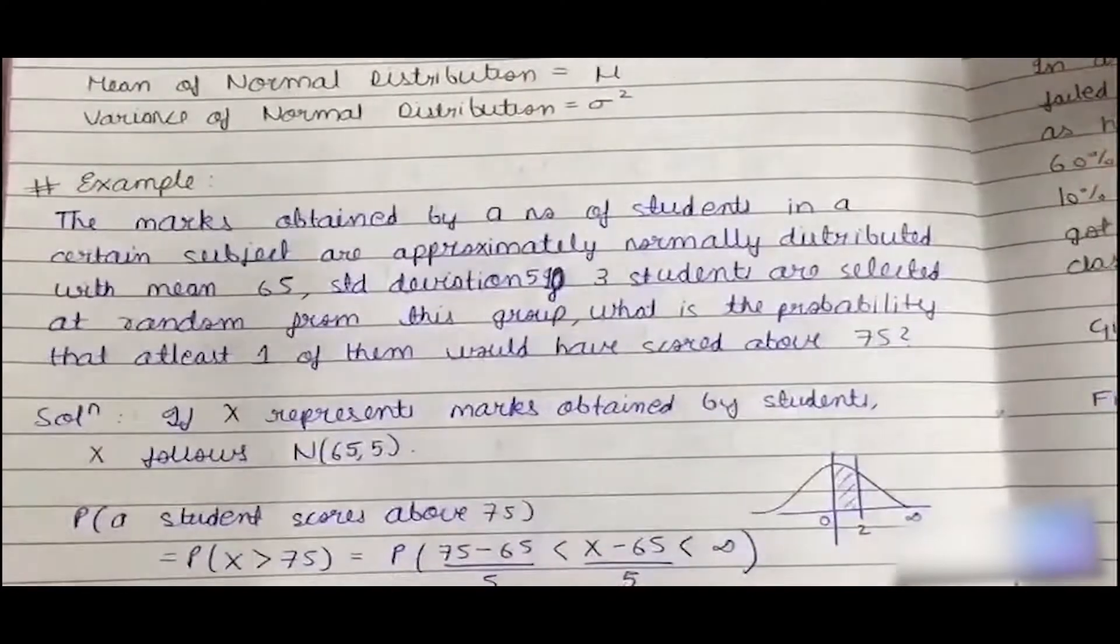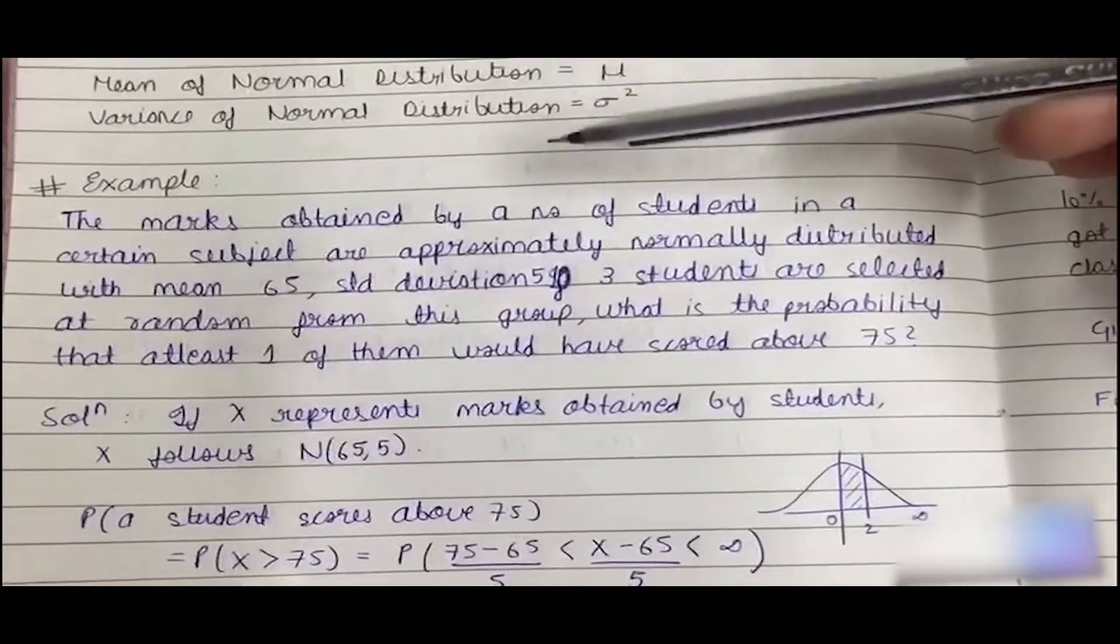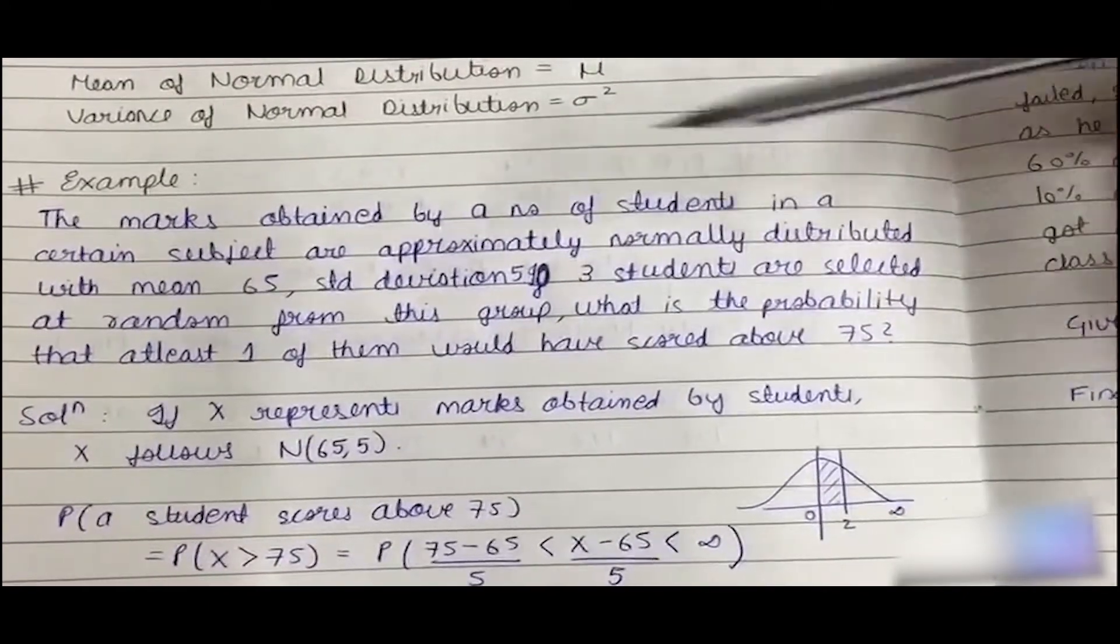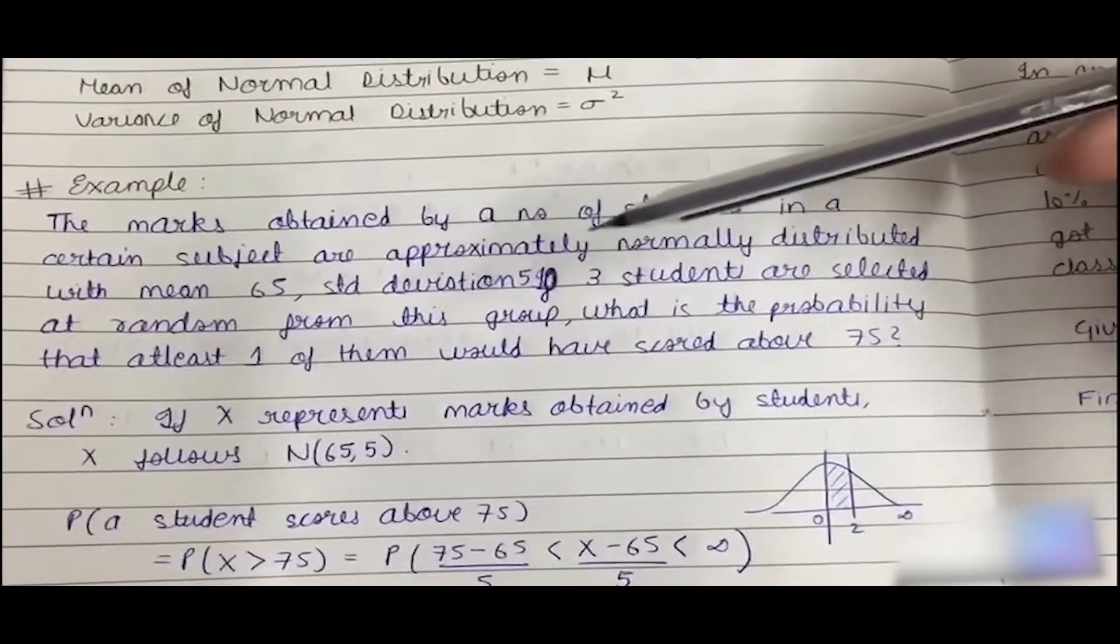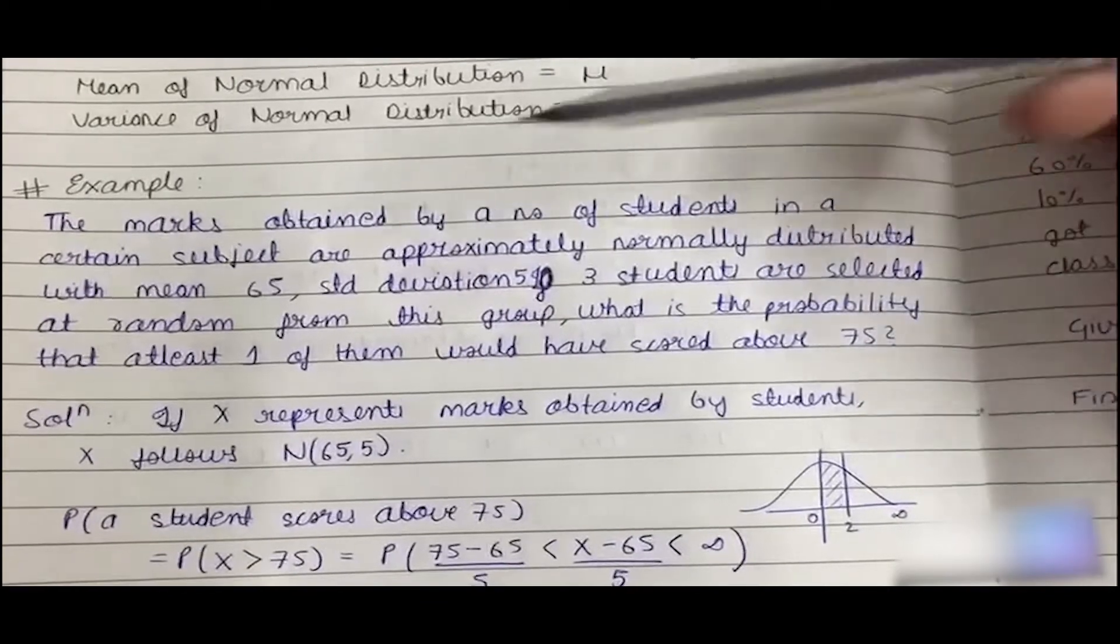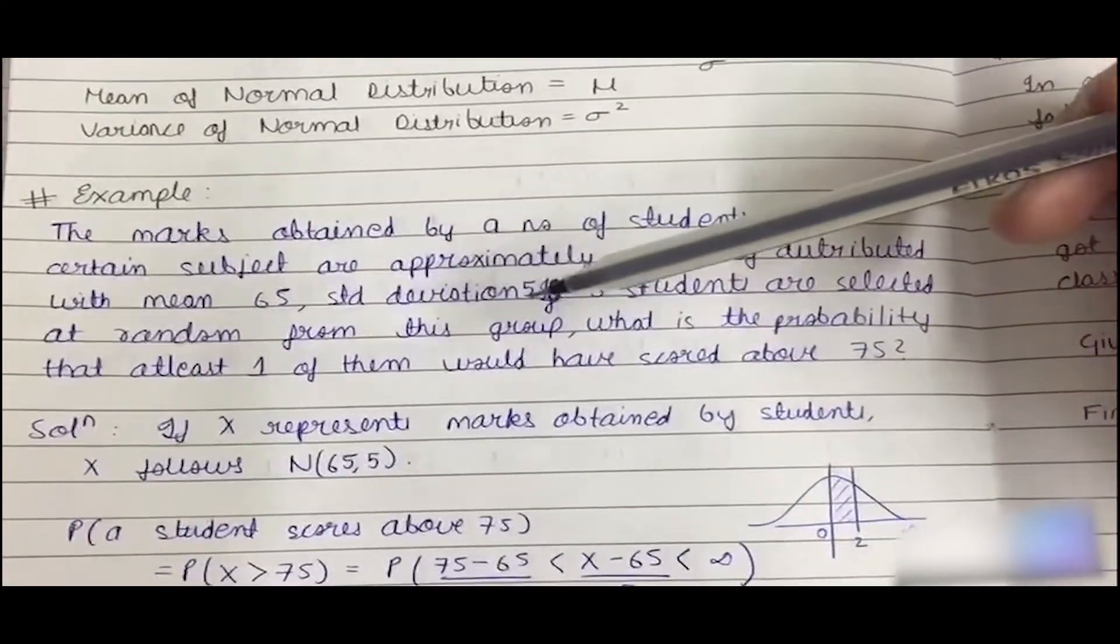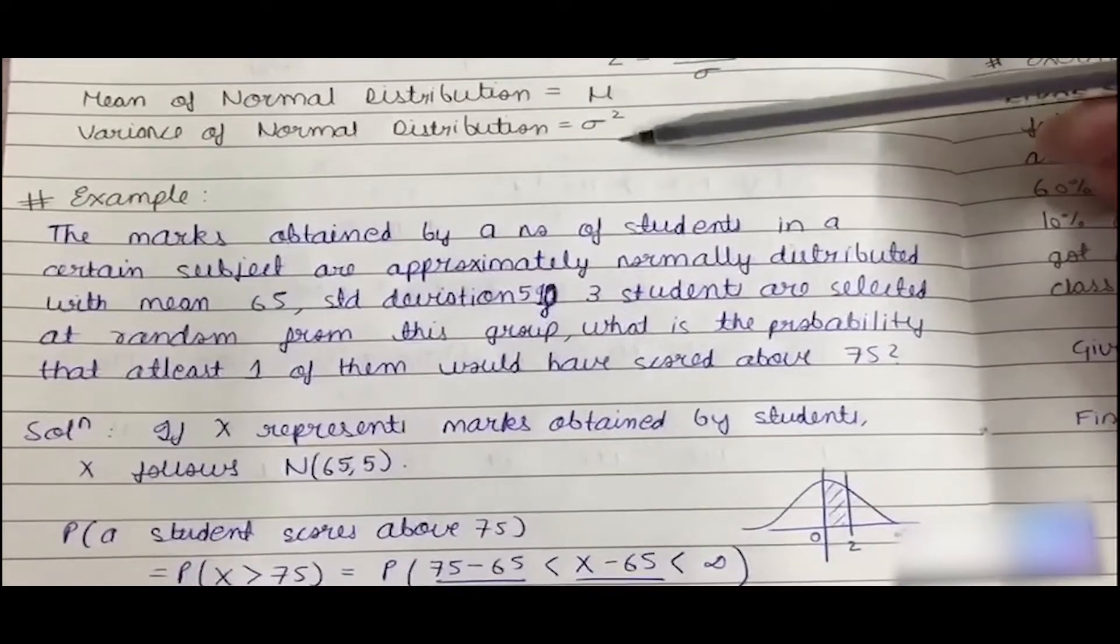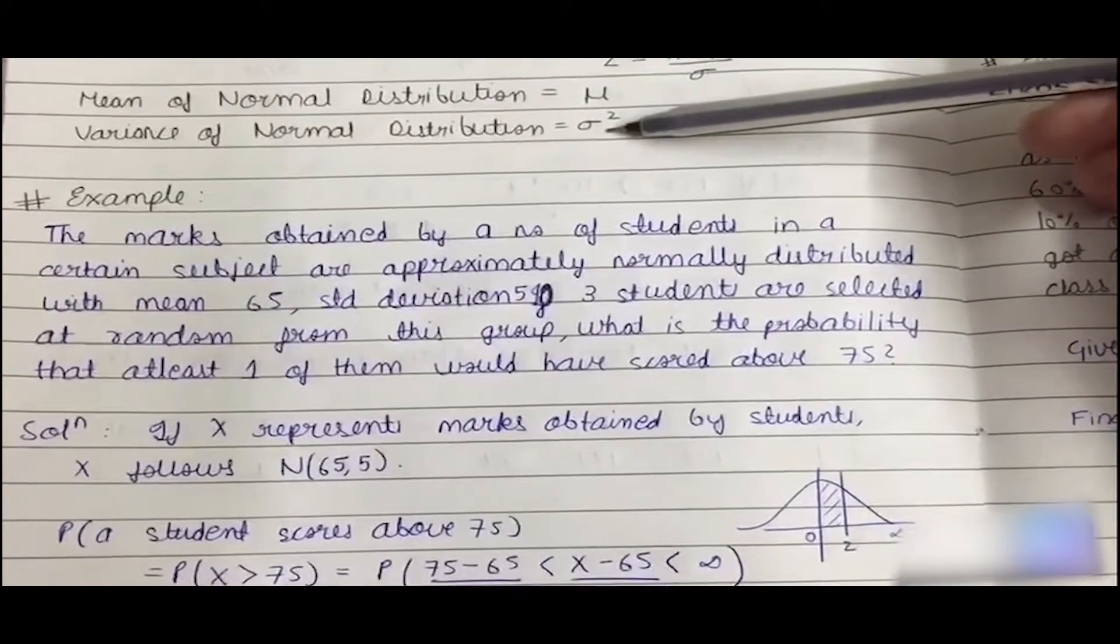Now let us see an example. In the question it is given that the marks obtained by a number of students in certain subjects are approximately normally distributed with mean as 65 and standard deviation as 5. So we have been given mu and sigma: 65 and 5.